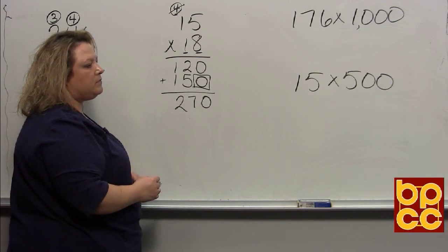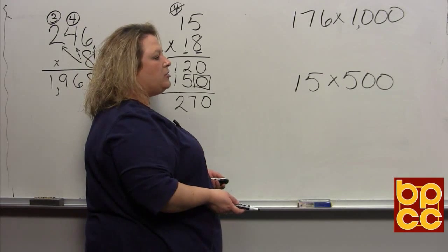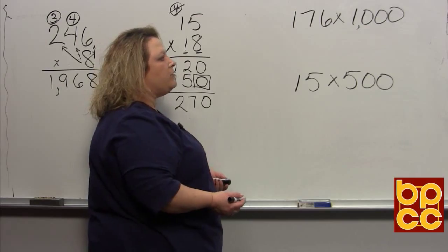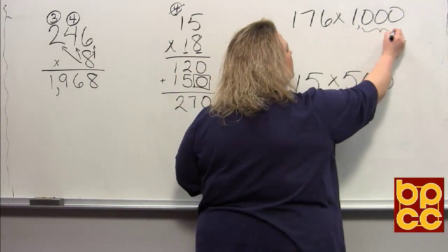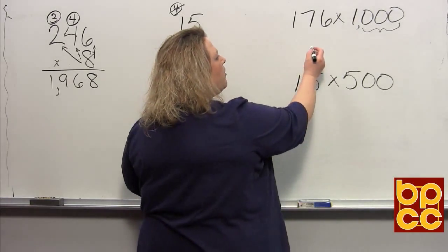There are other things that you can do, and they are shortcuts. Anytime you multiply by a power of 10, you can use shortcuts. When you do that, you're using the zeros as shortcuts.